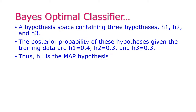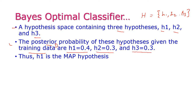Now let us see one example for this Bayes Optimal Classifier. Here we have three hypotheses h1, h2, and h3 in capital H. The posterior probabilities of these hypotheses given training data D are: P(h1 | D) = 0.4, P(h2 | D) = 0.3, and P(h3 | D) = 0.3. Here h1 is the MAP hypothesis — the maximum a posteriori hypothesis — because its value is greater than all other hypothesis values.